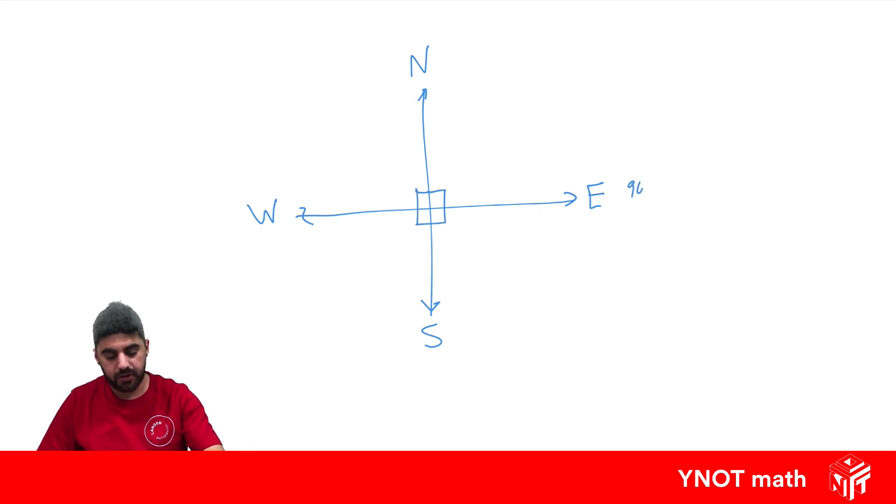They're all separated by 90 degree angles. So at east, we've got 90 degrees. At south, we've got 180 degrees. At west, we've got 270 degrees. North is zero degrees, but it's also 360 degrees.